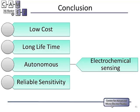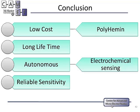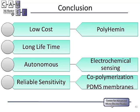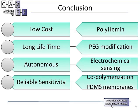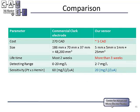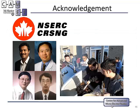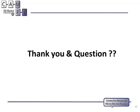In conclusion: automatic data collection is satisfied by electrochemical sensing; low cost is satisfied by poly-hemin replacement of platinum; reliable sensitivity is satisfied by the co-polymerization method and PDMS membrane; and long-term availability is satisfied by PEG modification. Comparing our sensor to commercially available sensors, the cost is lower and the lifetime is longer. Although the sensitivity is lower because we use cheaper materials, it is still sufficient for environmental water sensing. I'd like to thank NSERC for funding, all my supervisors and lab mates for their help, and thank you for your attention. I'm happy to take questions.